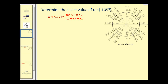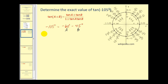To determine the exact value of tangent of negative 105 degrees using reference angles, we need to figure out how to add or subtract reference angles to obtain negative 105 degrees. Negative 105 degrees equals negative 60 degrees minus 45 degrees, so we'll use negative 60 for angle A and 45 for angle B, and we'll use the difference identity.